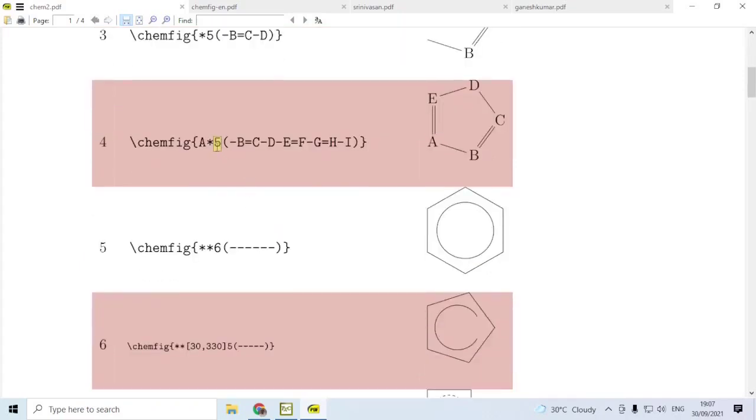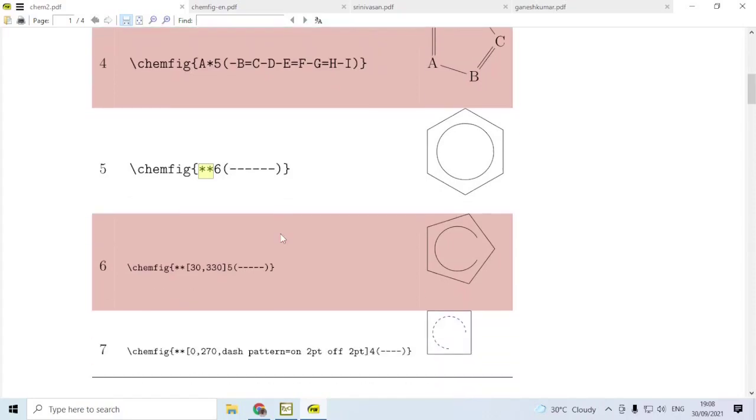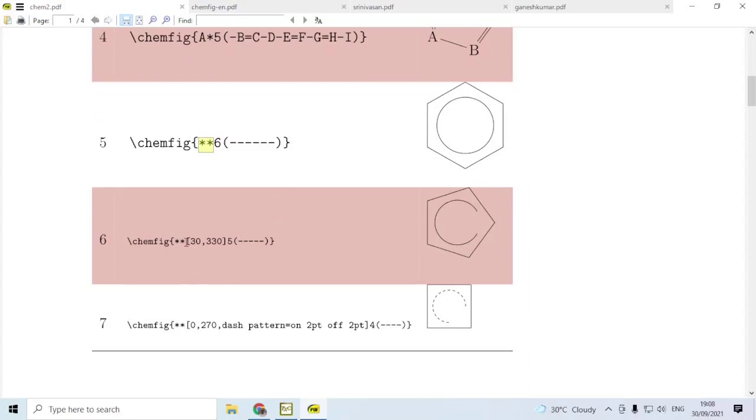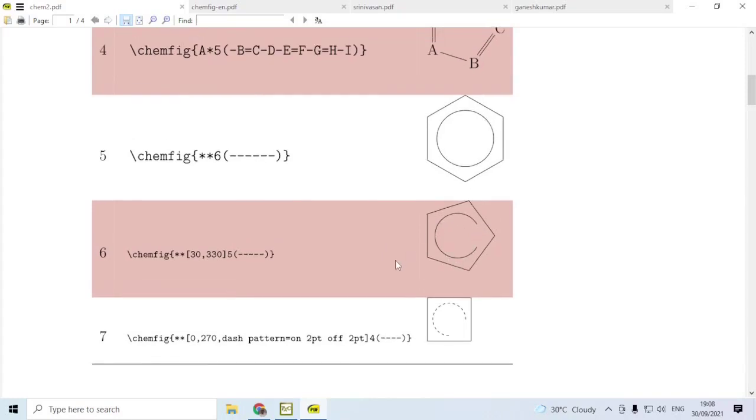Instead of using single star, suppose you use double star and a 6-sided ring is specified. Then 6 bonds are also specified here. Therefore, you get a 6-sided ring within which we have a complete circle because of this double star. And the inner circle need not be full, it need not be complete. You can specify the start angle for the circle and the end angle for the circle as 30 and 330. You have the inner circle starting at 30 degrees, going up to 330 degrees.